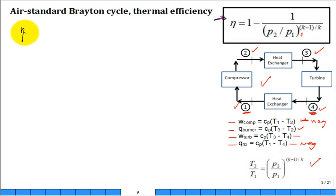We start, and we say the thermal efficiency is the ratio of the net work, W net, divided by the Q in. The Q in is in this burner.